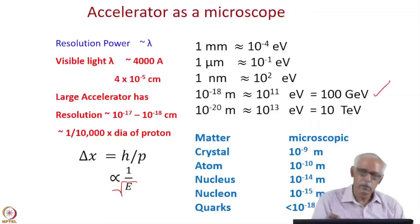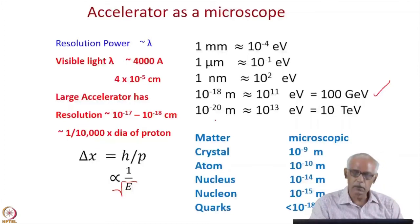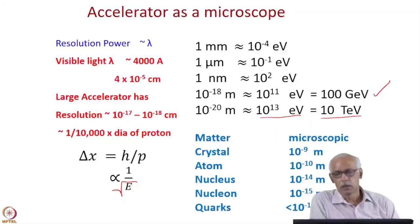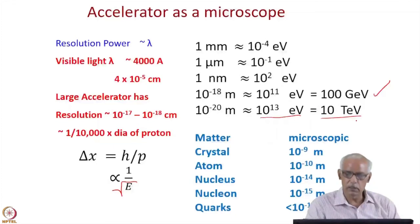And for particles of 10 to the power minus 20 meter, that means minus 18 centimeter, you need this kind of energies which are of the order of 10 TeV. Therefore, if you want to find out what is the sub-structure of quarks then you will need energies which are higher than this.